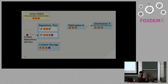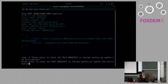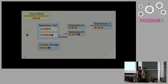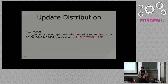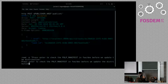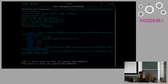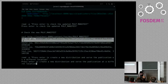We have a new repository version, so let's publish it and create another publication. Now that we have a new publication, we want to update our distribution so the new set of content is available at the same path. Right now before the update, curling the Pulp manifest shows only three files. We update the distribution specifying the new publication, and now we can see there is a fourth file available.